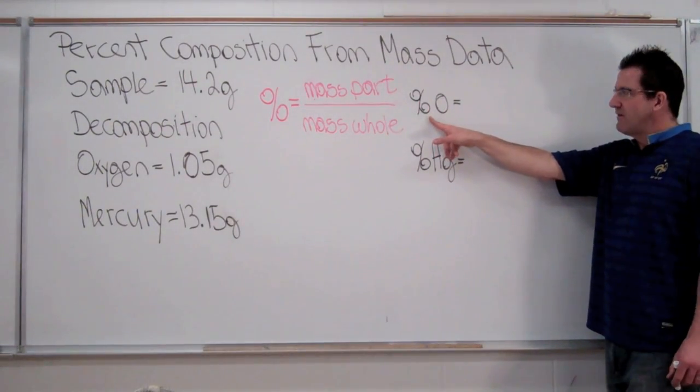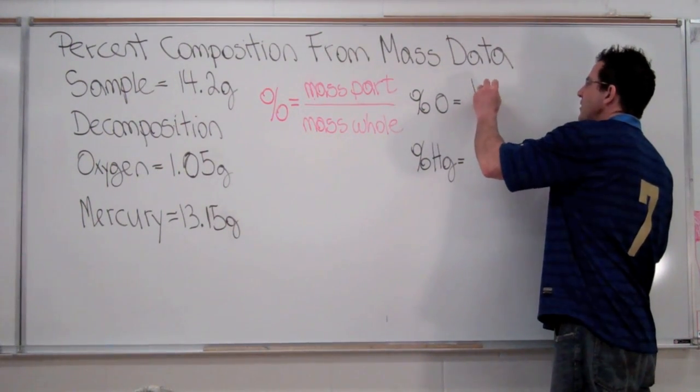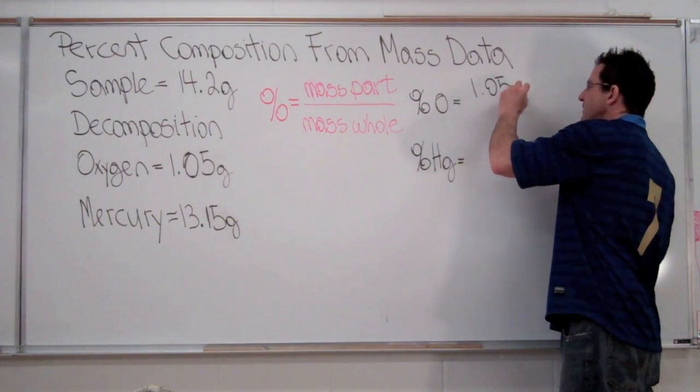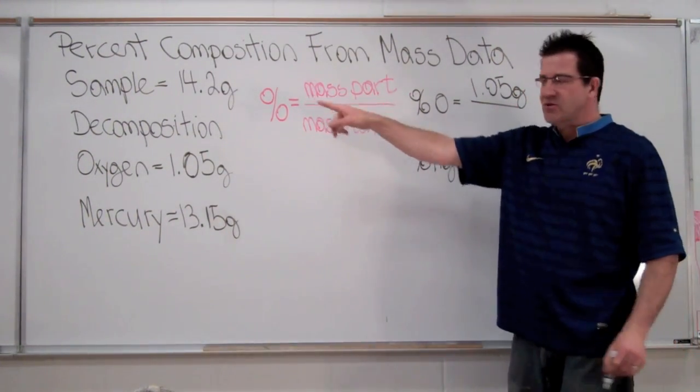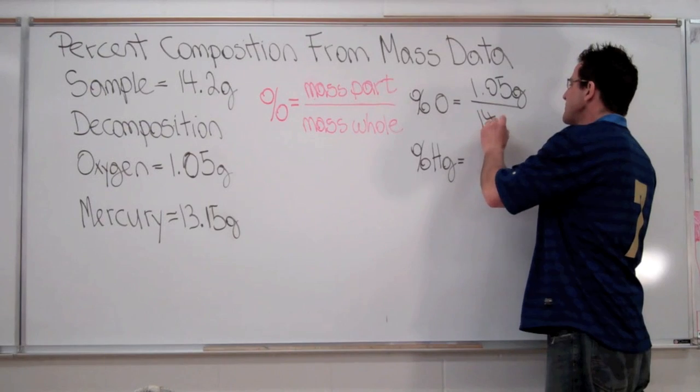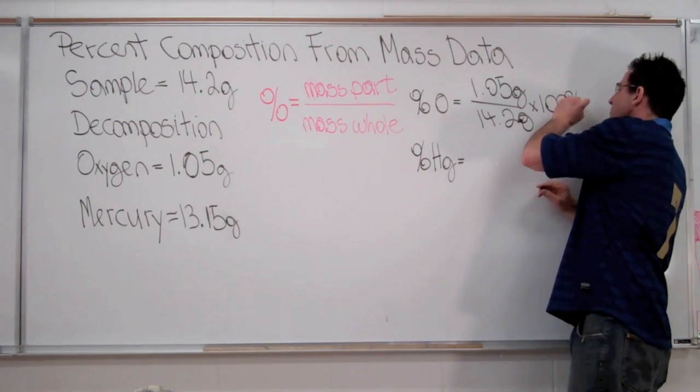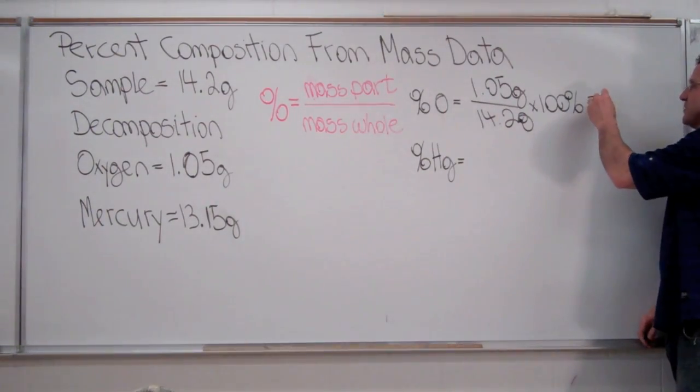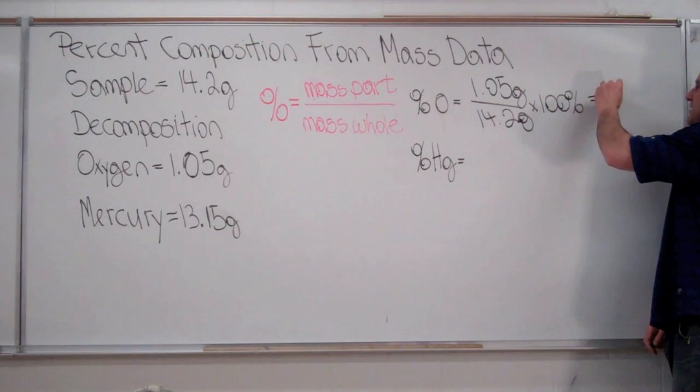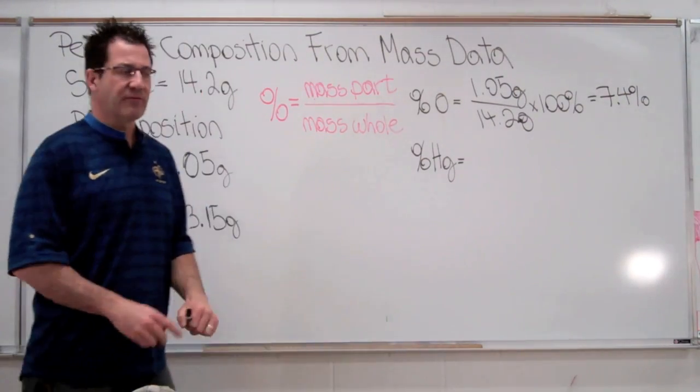Here we have oxygen right here. We can figure out the percent composition of oxygen. We had 1.05 grams of oxygen. We're going to divide that by the mass of our total sample, 14.2 grams. We're going to multiply that by 100 percent and we come up with the percentage of oxygen in our sample is 7.4 percent.